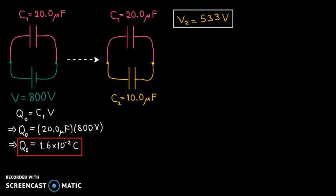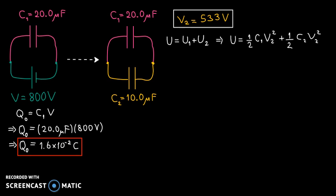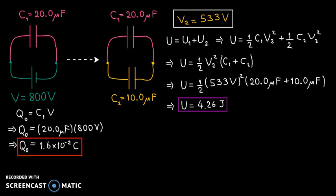Next, let's look at the energy. What is the final energy of the system? That will be the energy stored in C1 plus the energy stored in C2. Using the energy formula one-half C times V squared, with C1 and C2 labeled separately but using V2 for voltage since V1 and V2 are the same, we factor out V2 squared and plug in the numerical values. The total potential energy when the two capacitors are connected is 4.26 joules.